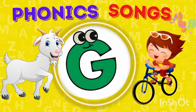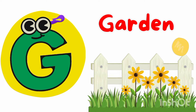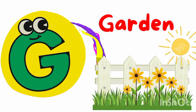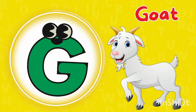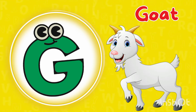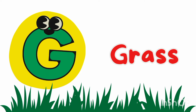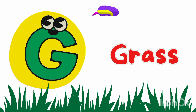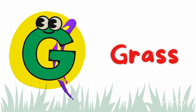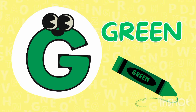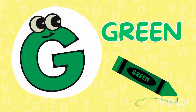G is for garden, g-g-garden. G is for goat, g-g-goat. G is for grass, g-g-grass. G is for green, g-g-green.